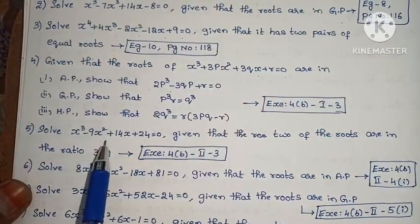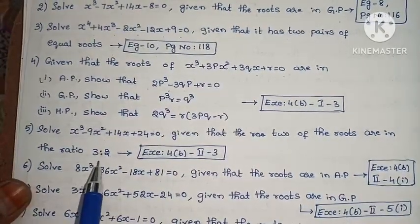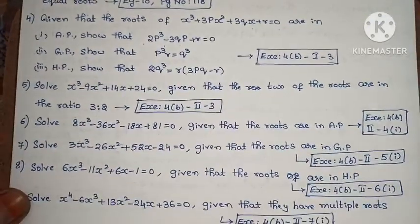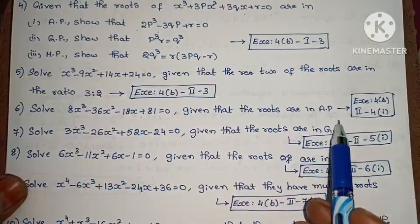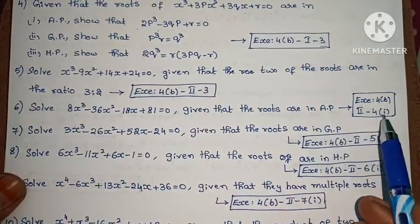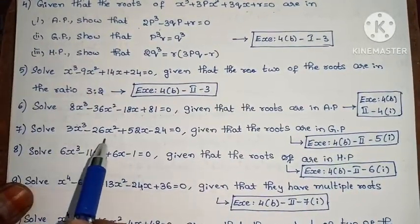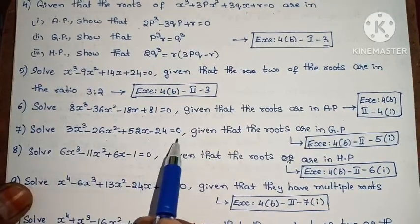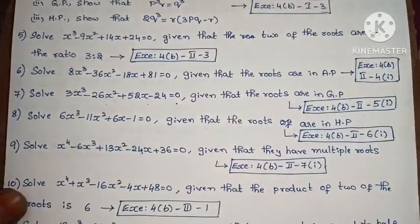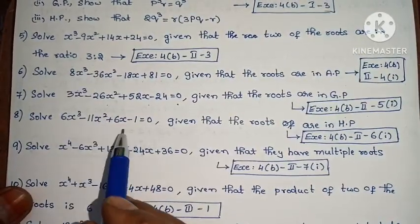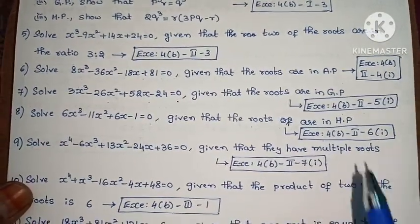Next, solve x³ minus 9x² plus 14x plus 24 equals 0, given that two of the roots are in ratio 3:2. Exercise 4A, second Roman numeral, third one. Next, solve 8x³ minus 36x² minus 18x plus 81 equals 0, given that the roots are in AP. Exercise 4A, second Roman numeral, fourth, first one. Next, solve 3x³ minus 26x² plus 52x minus 24 equals 0, given that the roots are in GP. Exercise 4A, second Roman numeral, fifth, first one. Next, solve 6x³ minus 11x² plus 6x minus 1 equals 0, given that the roots are in HP. Exercise 4A, second Roman numeral, sixth, first one.